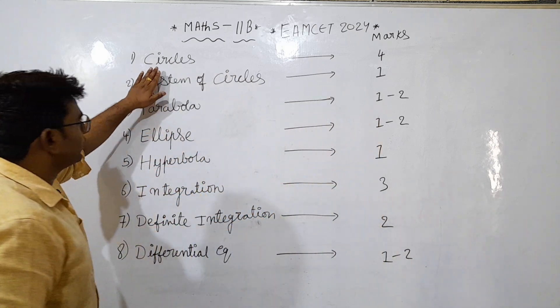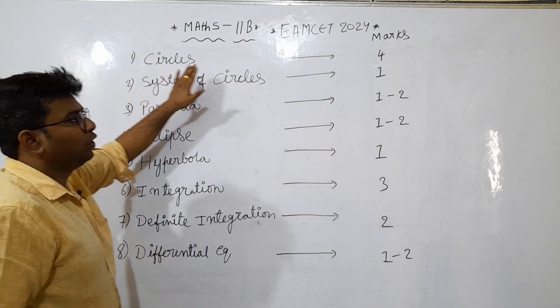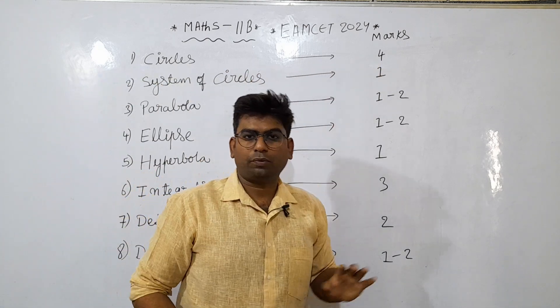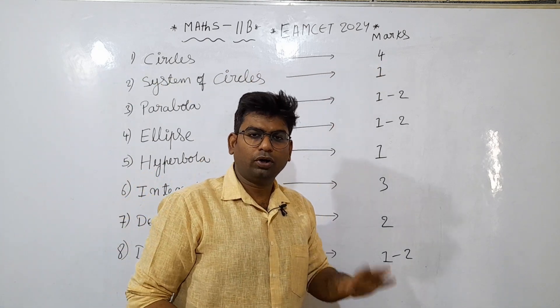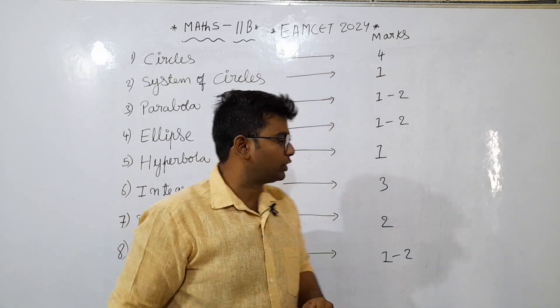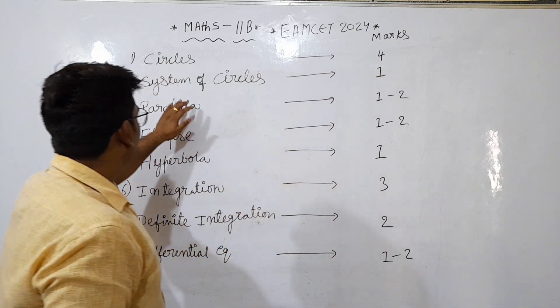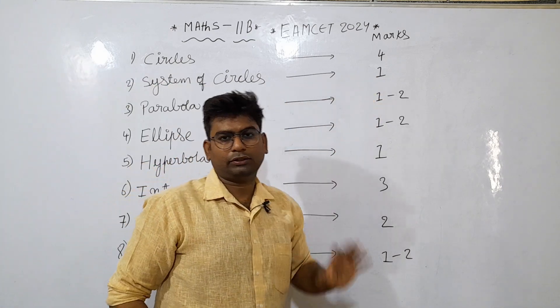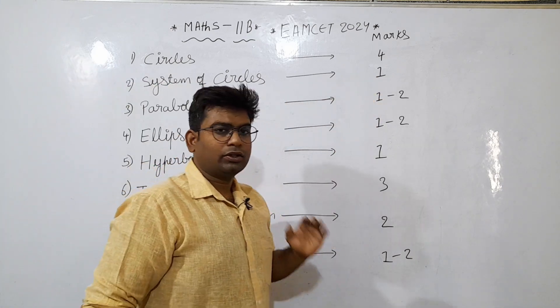So, circles is important — we need to do around 4 questions from circles. We expect 4 questions from circles. And from System of Circles, one question will definitely come.